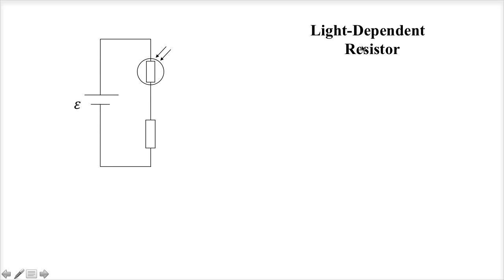These are sometimes called LDRs for short. A light-dependent resistor is a resistor that responds to light intensity. When you make the light brighter, when you increase the intensity, the resistance decreases. So it's pretty similar to a thermistor, but instead of responding to temperature, it responds to the intensity or brightness of light.